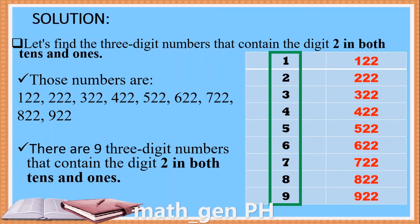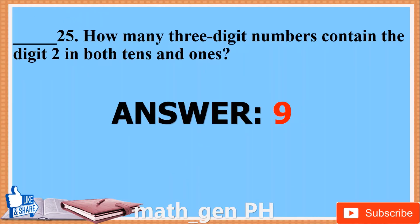Solution. The 3-digit numbers that contain the digit 2 in both tens and ones are: 122, 222, 322, 422, 522, 622, 722, 822, 922. There are 9 such three-digit numbers. Answer: 9.